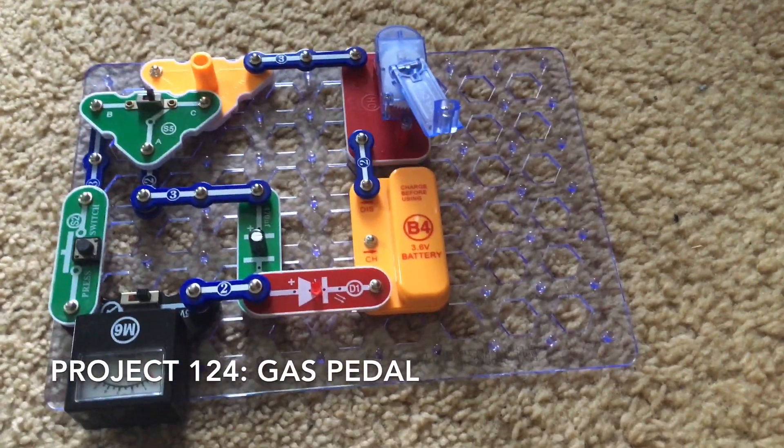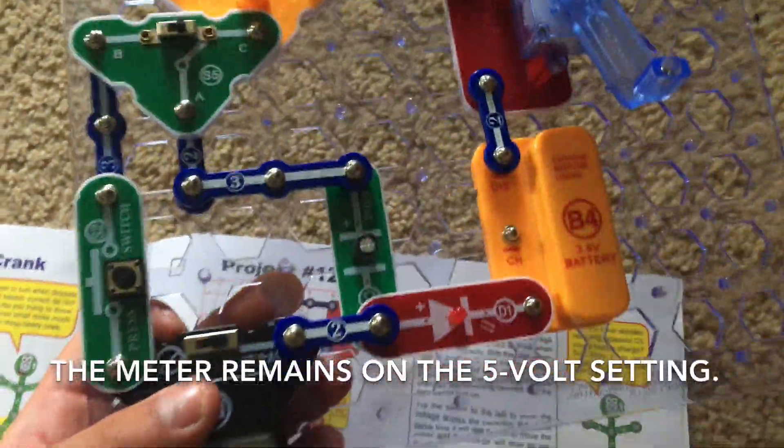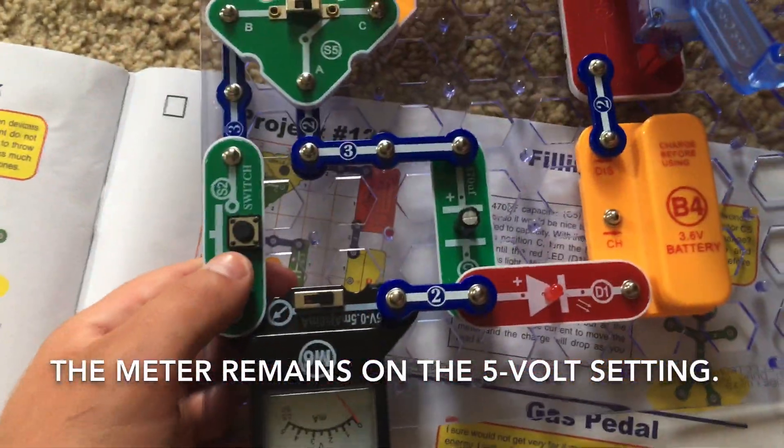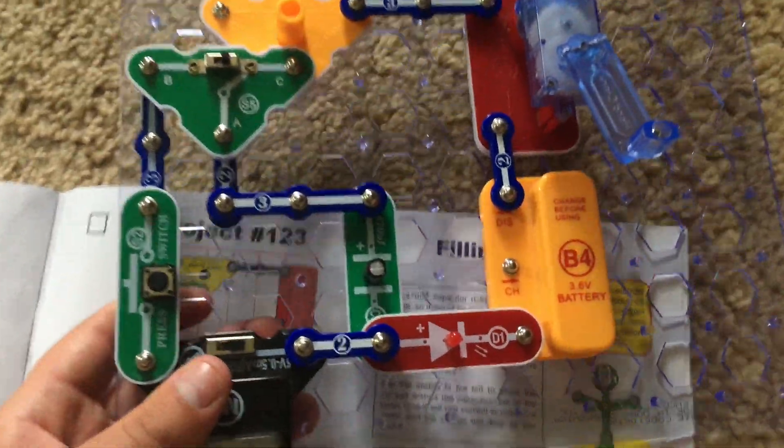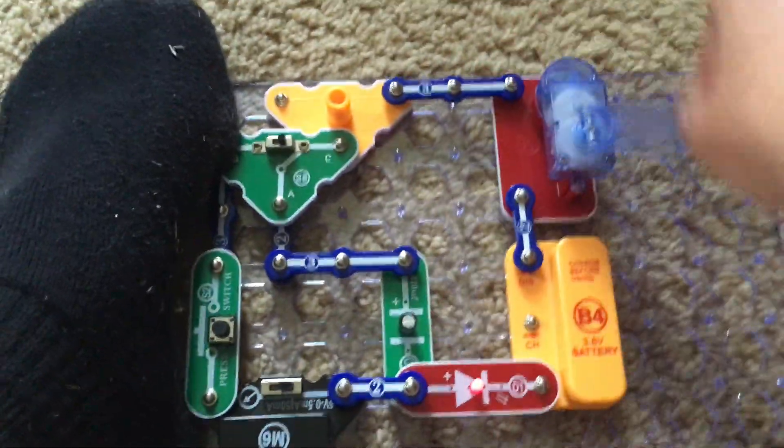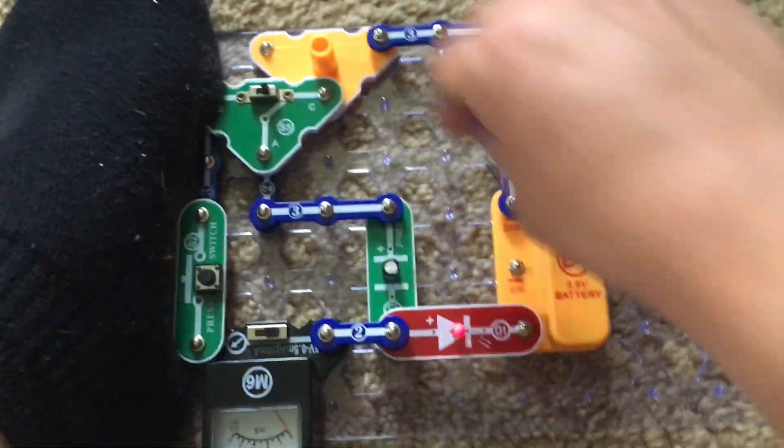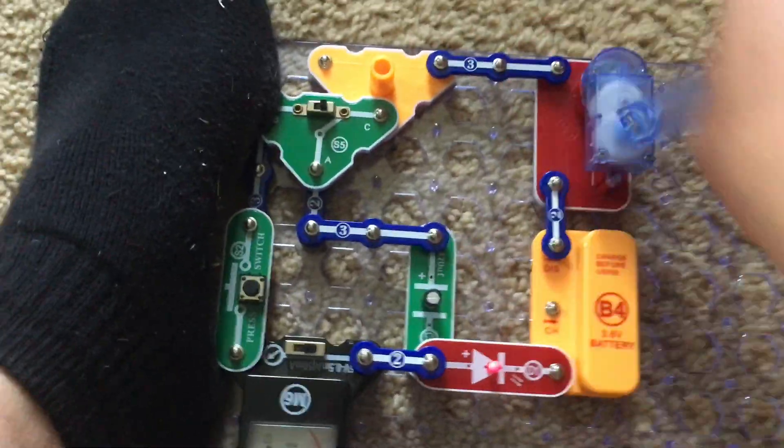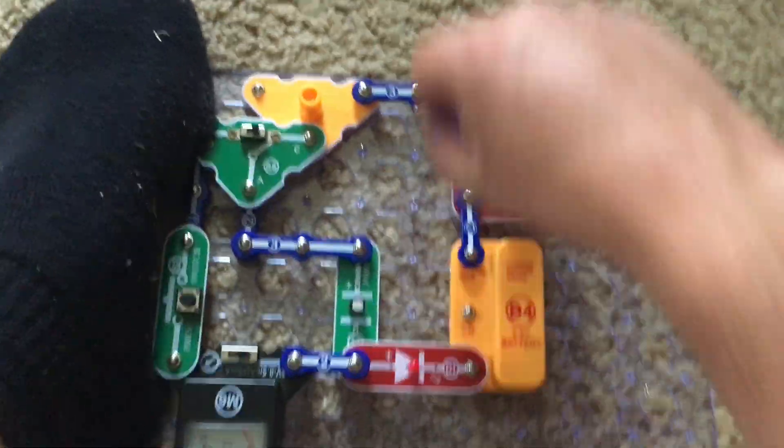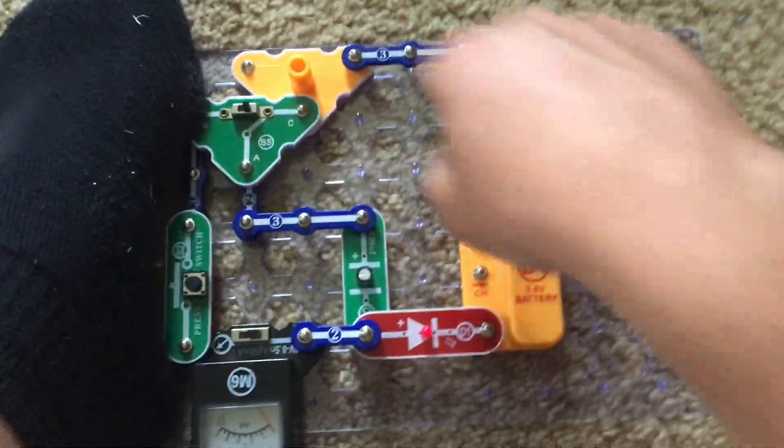Project 124 uses a modified version of the previous circuit, and I added the press switch, as you could say. You would pump energy into the capacitor just like in the previous project, and you would keep turning the hand crank until the LED no longer lights. I'm not going to turn it for long this time for time's sake.